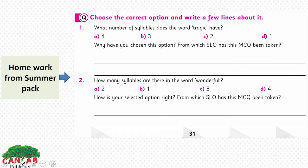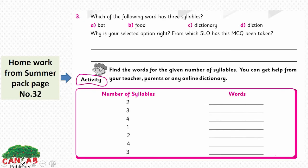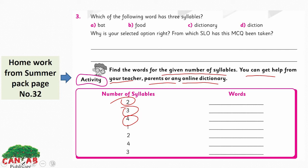This is your homework from the summer pack, page number 31 — choose the correct option and write a few lines about it. This is also your homework from summer pack, page number 32. We also have an activity here: find words from a given number of syllables. You can get help from your teacher, parents, or any online dictionary. Find words with two, three, or four syllables.